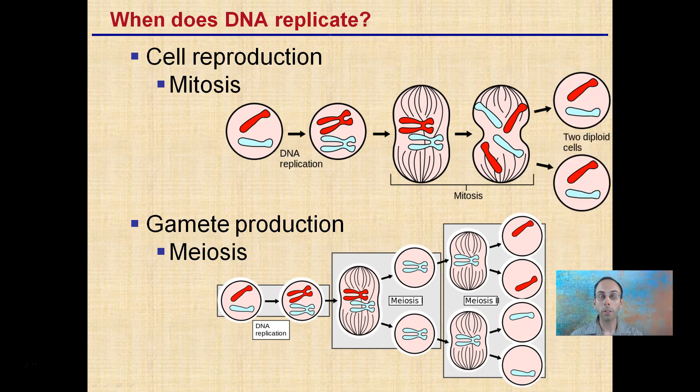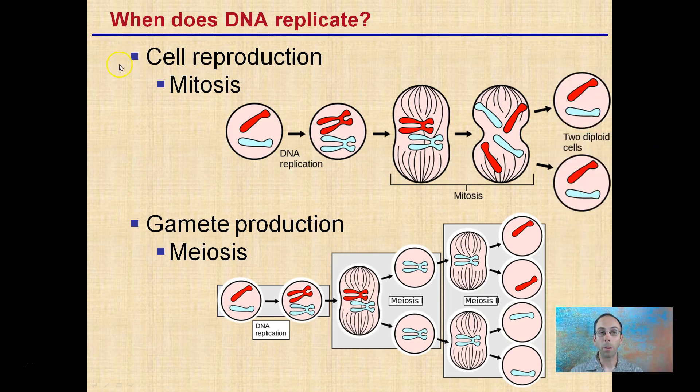Lastly, when does our DNA replicate? It replicates when our cells reproduce to produce identical copies in the case of mitosis, and in gamete production—the production of sperm, egg, or pollen grains through the process of meiosis. This is when we particularly want to break those bonds to reformulate and carry on that genetic information to the next generation, whether through gametes like pollen, sperm cells, or egg cells, or producing identical copies of our cells.